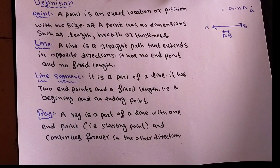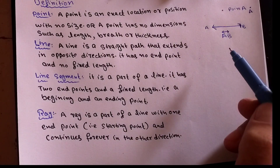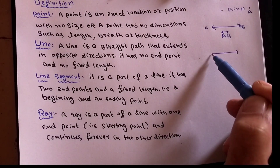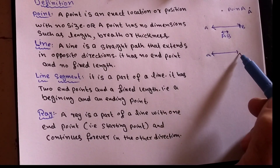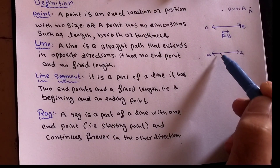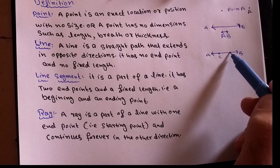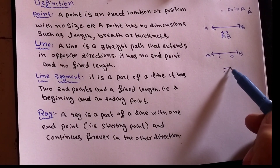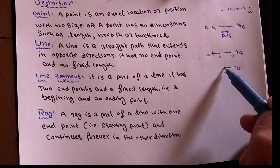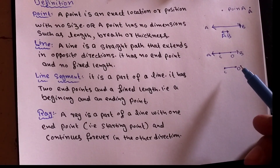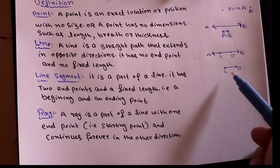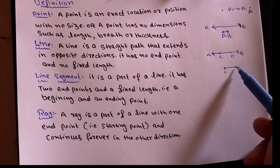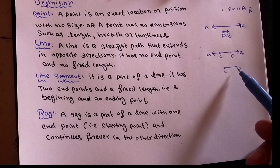The next concept is line segment. Line segment is basically a part of a line. For example, if AB is a line, and we cut points on it - say C and D - then CD is a line segment. A line segment is a part of a line with two endpoints. It has a fixed length and two definite endpoints - a beginning and an ending point.